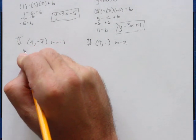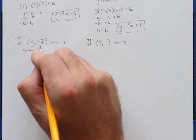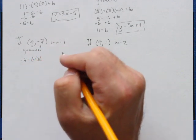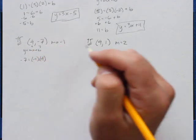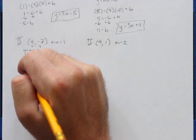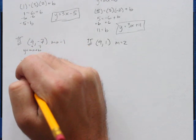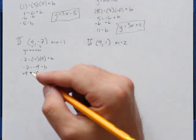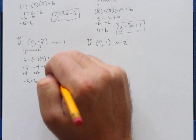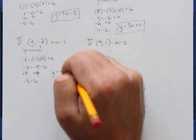So here we are. y equals mx plus b. So 4 is x, negative 7 is y. Negative 7 equals my slope, which is negative 1, times my x value at this point, which is 4, plus b. Now 4 times negative 1 is negative 4, so negative 7 equals negative 4 plus b. Add 4 to each side — negative 7 plus 4 is negative 3, so b equals negative 3. My equation is y equals negative x minus 3.